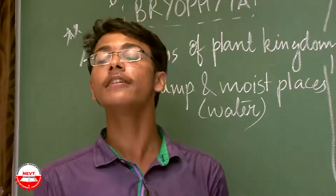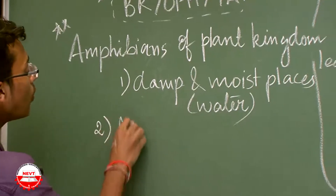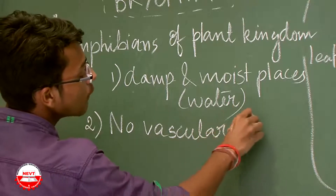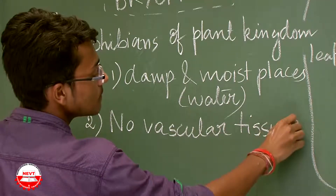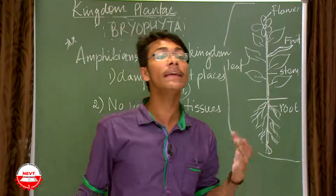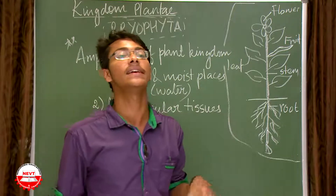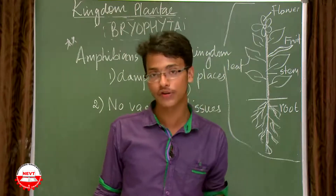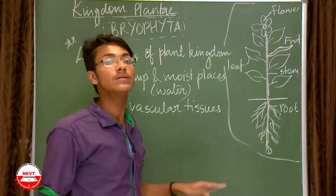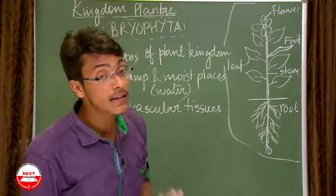The second important point under Bryophyta is that they have no vascular tissues. No vascular tissues means they do not have any conducting tissues like xylem and phloem, as we see in highly organized plants in later sections.